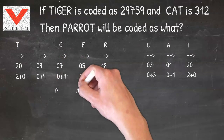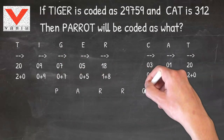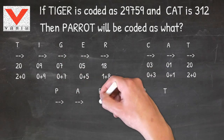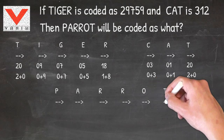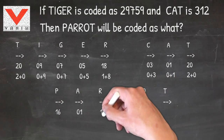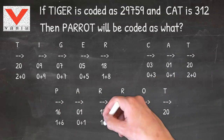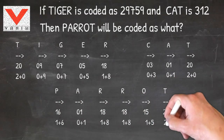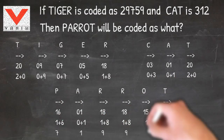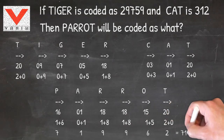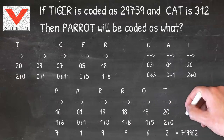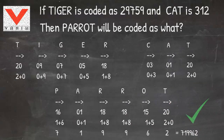In parrot: P is 16, A is 01, R is 18, R is 18, O is 15, T is 20. So it will be coded as 719962.